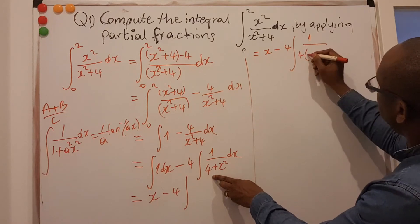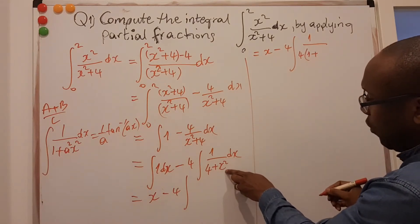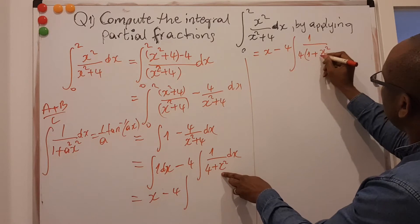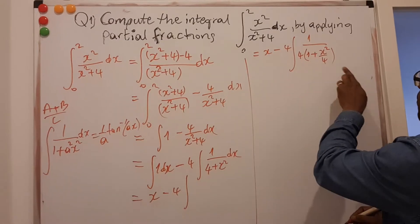If I factorize 4, then I'm left 1 here. But there was not 4 on this one, so I can put 4 below.